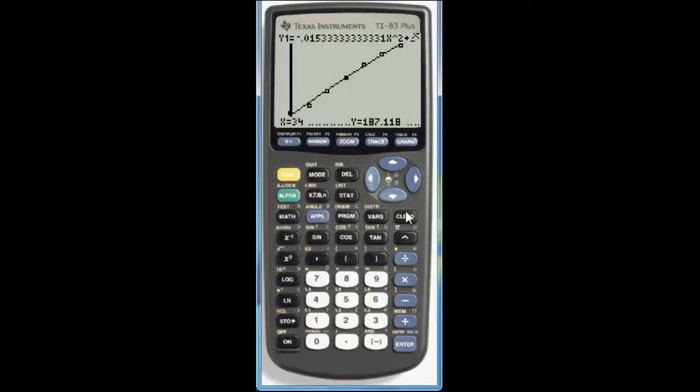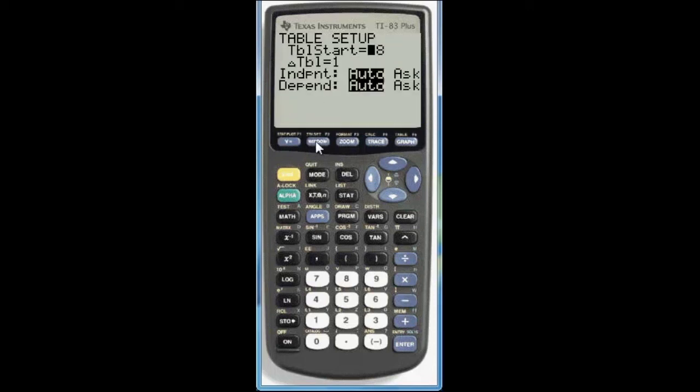I said there were a couple of options. The other option is to use a table. It will take whatever function you have under y1 and will give you a list of values. Similar to the table that's in the textbook or the two lists that we entered. So go to second and if you look just above window it says table set. We can start with 28 that's fine. And years only go up by one so that's fine. And then if you press second again and go to table which is just above graph.